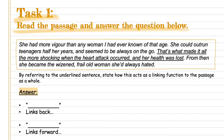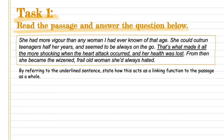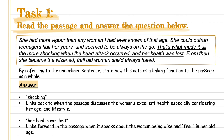This would be a chance for you to pause the video now and answer the question. For those a little less confident, you can look at the answer screen — I've given you a hint. Your first and third bullet points will be a quote, and your second and fourth will be how it links back and forward. The answer: 'shocking' links back to the passage when it discusses the woman's excellent health, especially considering her age and lifestyle. 'Her health was lost' links forward to the passage when it speaks about the woman being wizened and frail in her old age. The first two bullet points give us the first mark and the third and fourth — linking forward — give us our second mark.